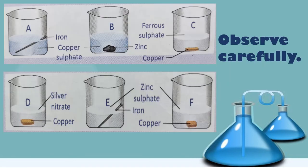Beaker A contains copper sulphate solution and an iron nail. Beaker B contains copper sulphate solution and a piece of zinc. Beaker C contains ferrous sulphate solution and a copper coin. Beaker D contains silver nitrate solution and a copper coin. Beaker E contains zinc sulphate solution and an iron nail. Zinc sulphate solution and a copper coin are kept in beaker F.